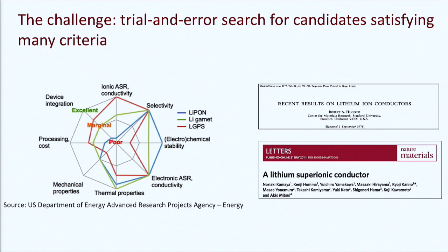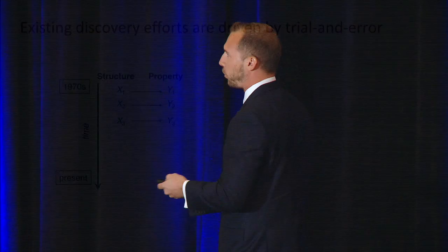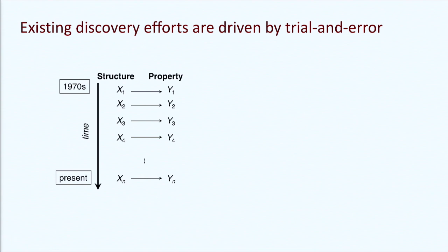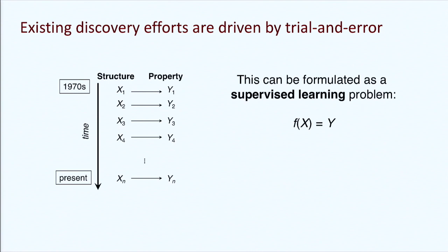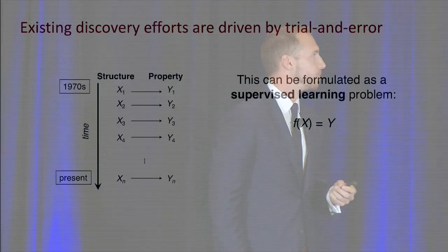The way this has worked from the 70s to present: we start with a structure, measure the properties, grab another structure if we don't like it, and repeat N times — generating a ton of data and wisdom. We could ask: how can we use that data more effectively? We're reformulating this as a problem in supervised learning. Can we find the function F that maps structure X to property Y very quickly? In material science this is mapping structure to property, and we want to learn from existing data to accelerate beyond trial and error.